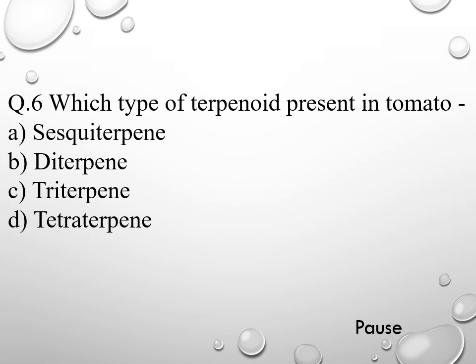Question 6. Which type of terpenoid is present in tomato? Option A sesquiterpene, option B diterpene, option C triterpene, and option D tetraterpene. The right answer is tetraterpene. So in tomato, we can find tetraterpene.